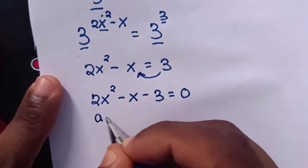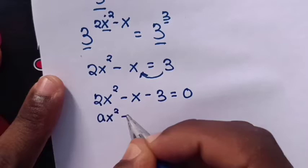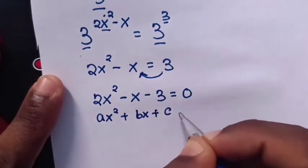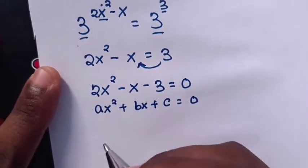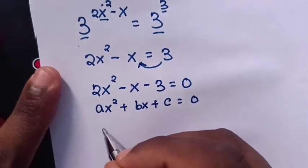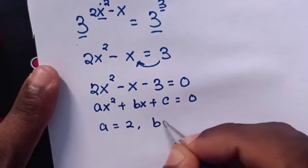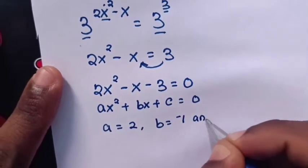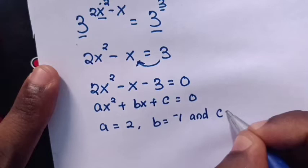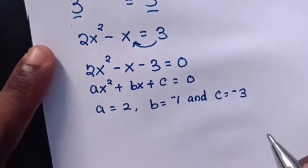Now this is a quadratic equation in the form of ax square plus bx plus c equals 0, whereas a equals 2, b equals negative 1, and c equals negative 3.